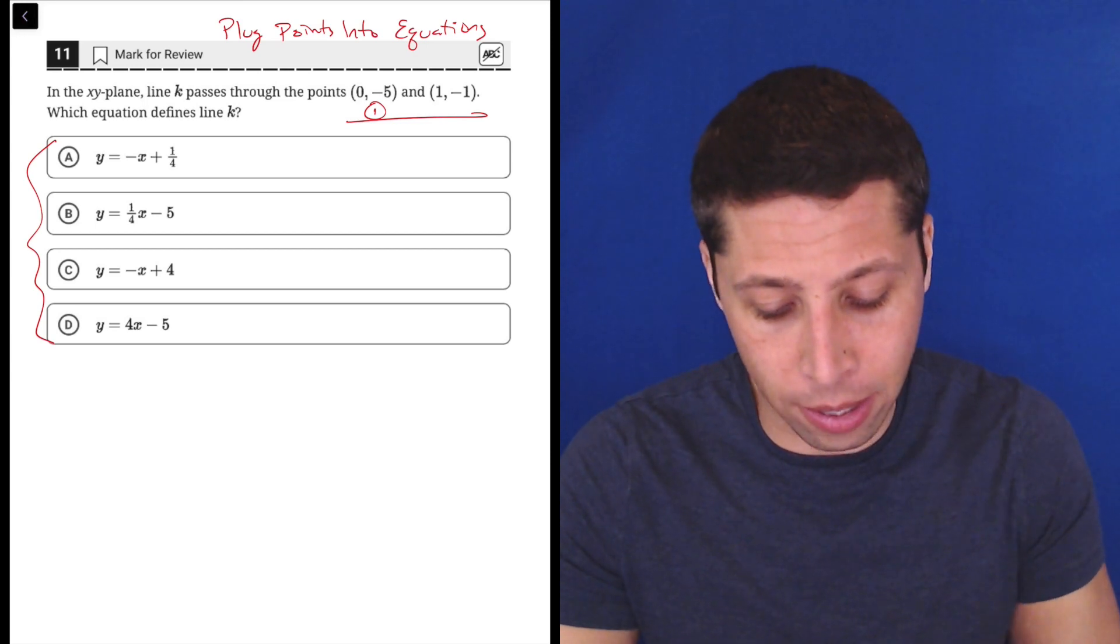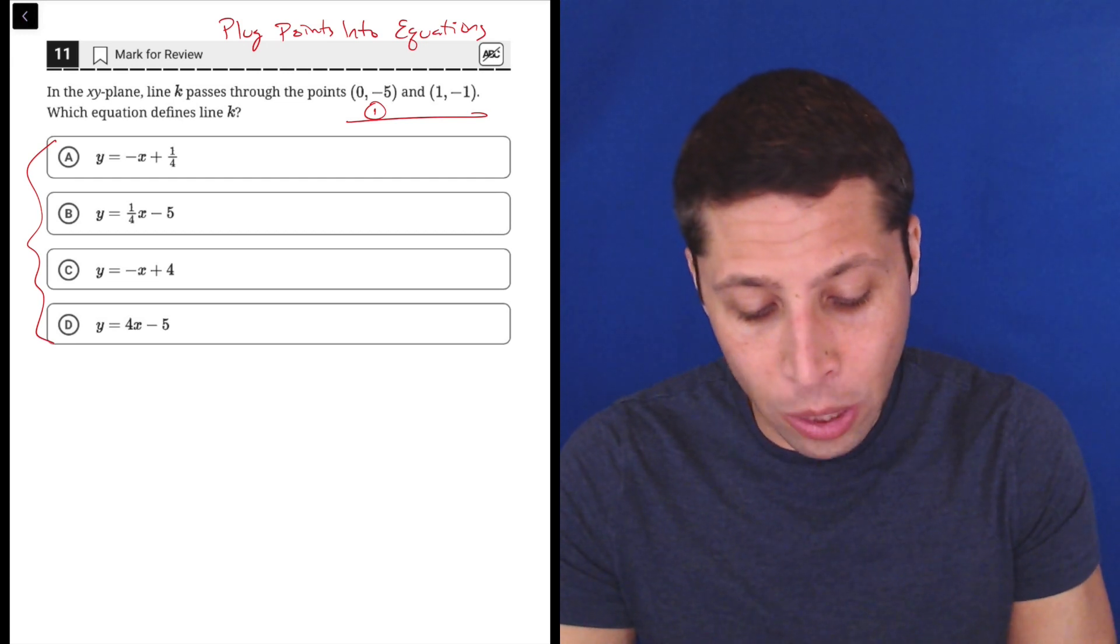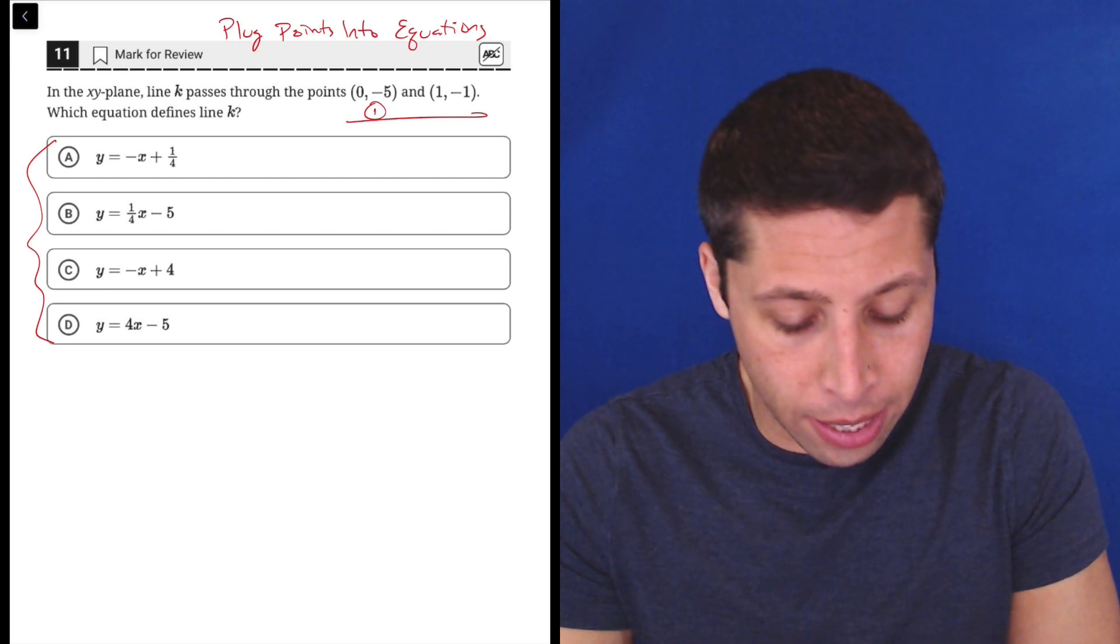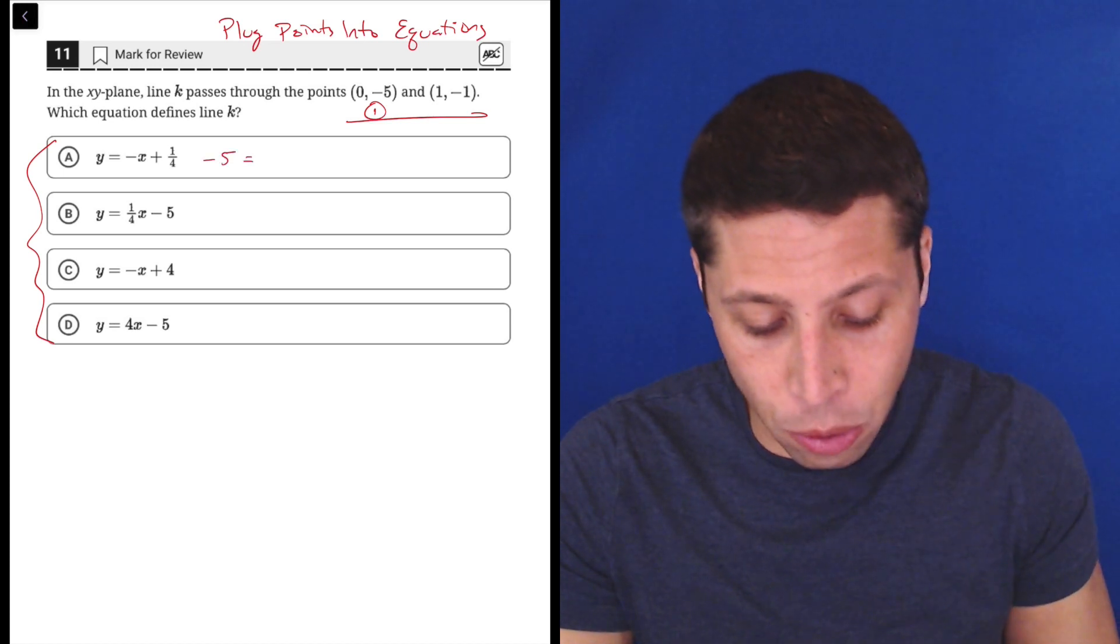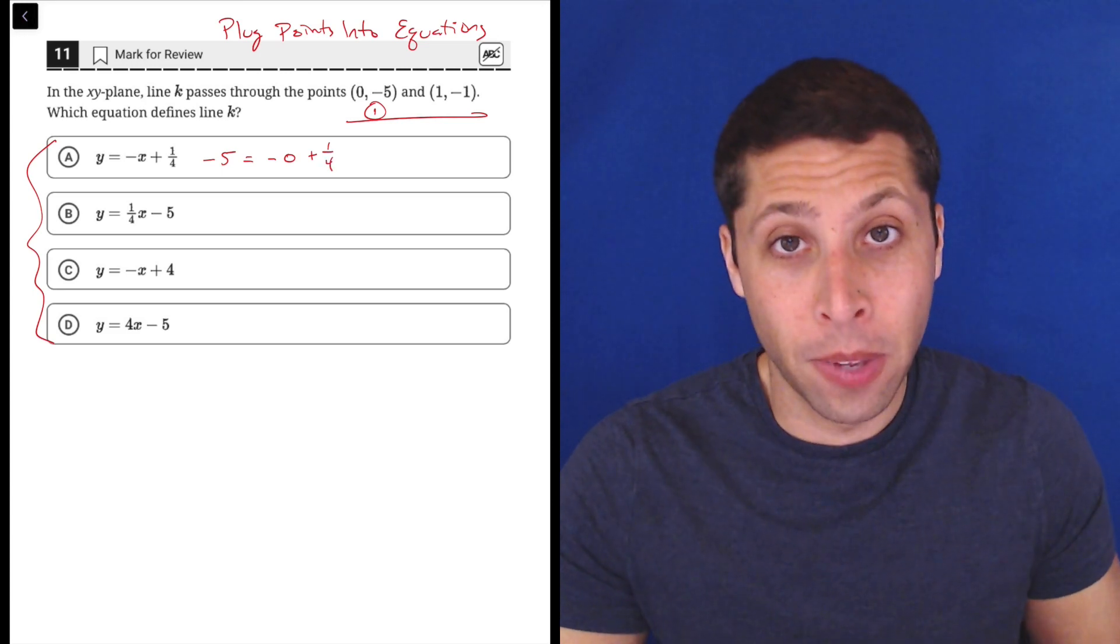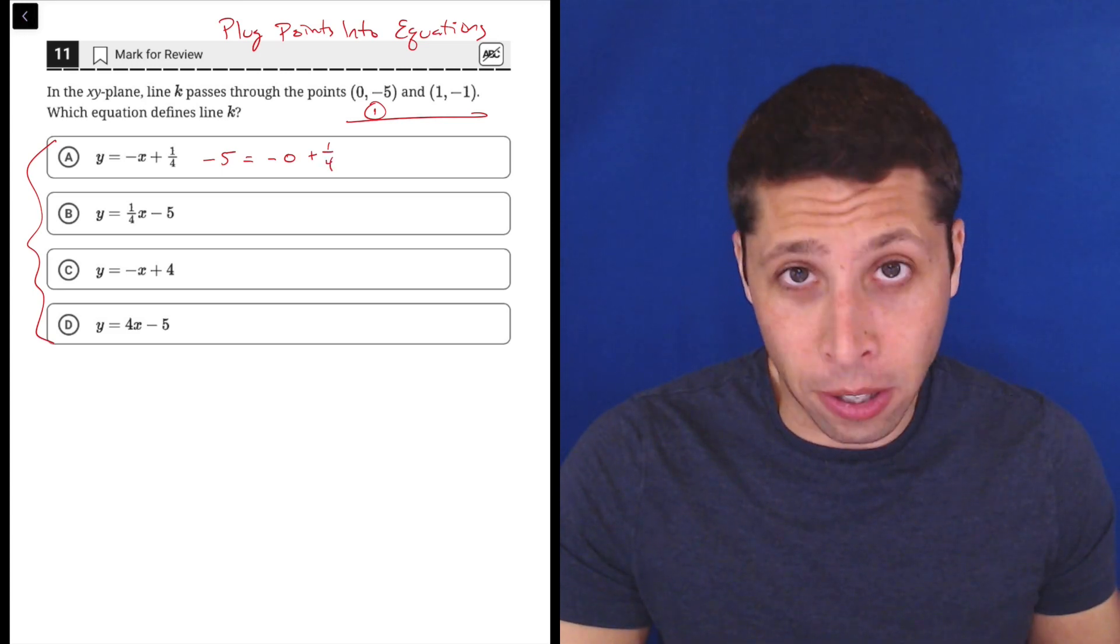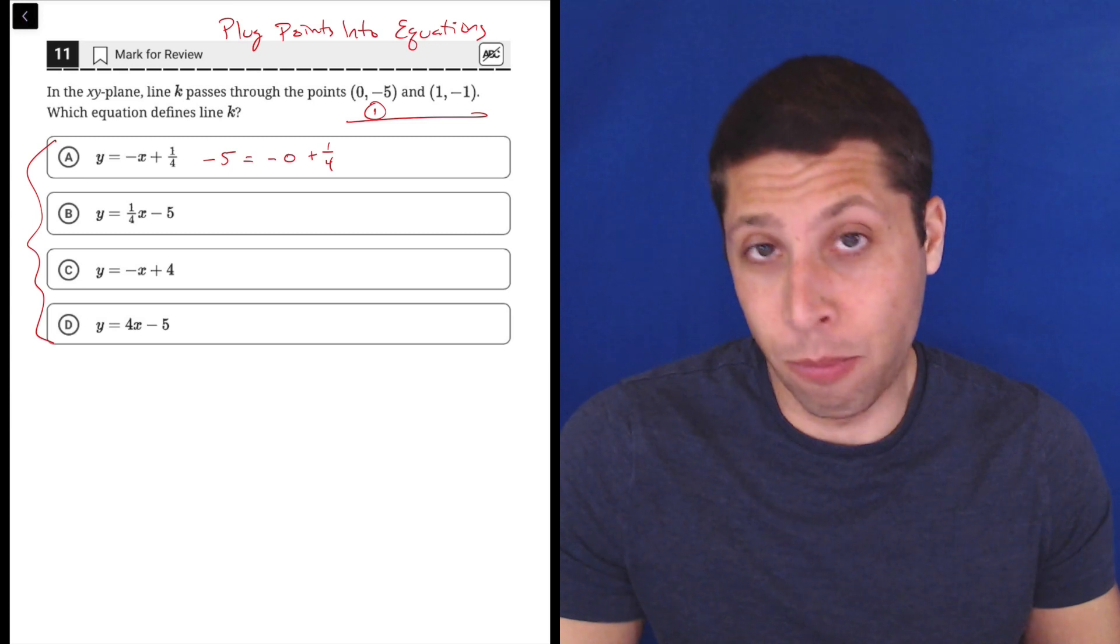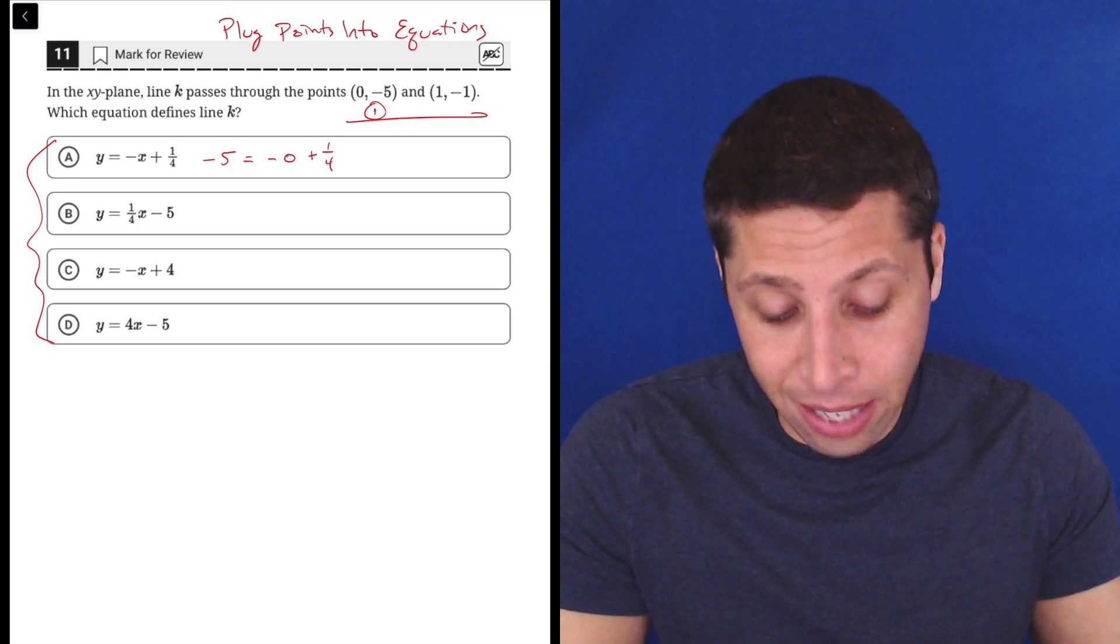Just for choice A, for example, we can plug in. The way I would do it is I would actually plug in for y. So -5 equals -0 + 1/4. Well, -0 is just 0, and then plus 1/4 is 1/4, but it's not -5.